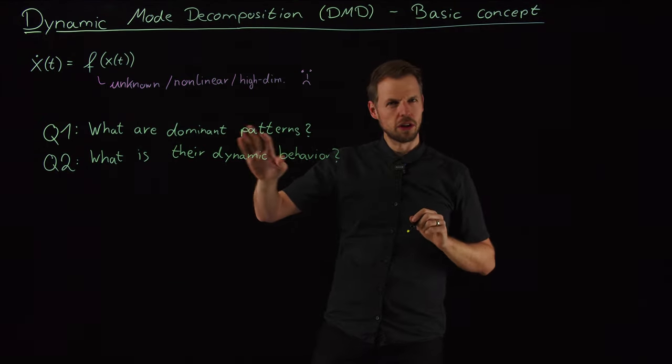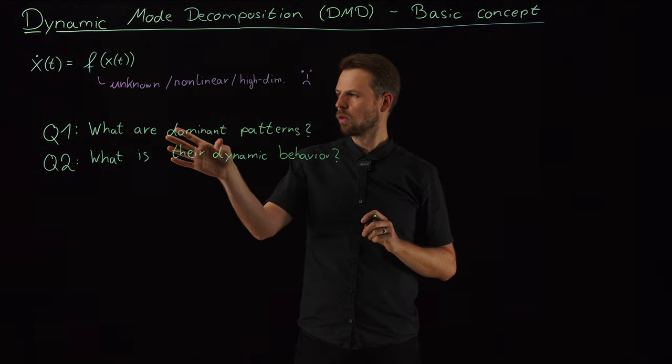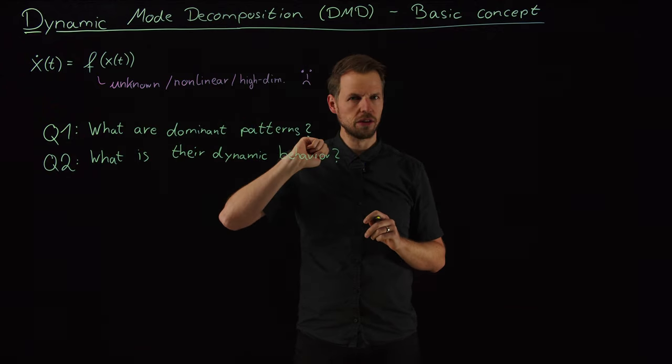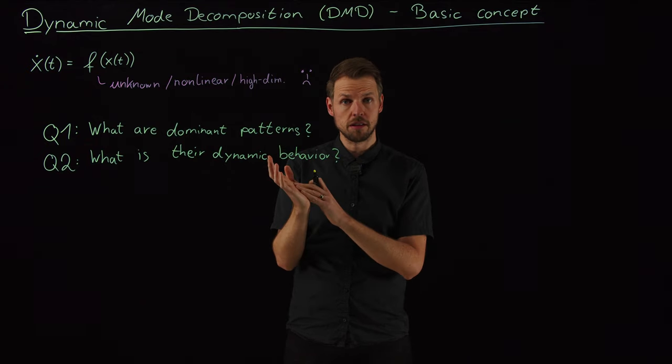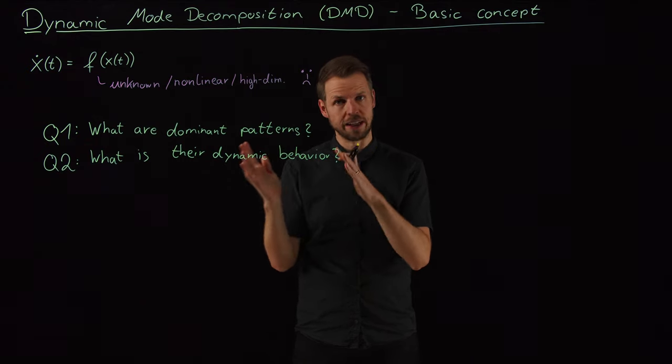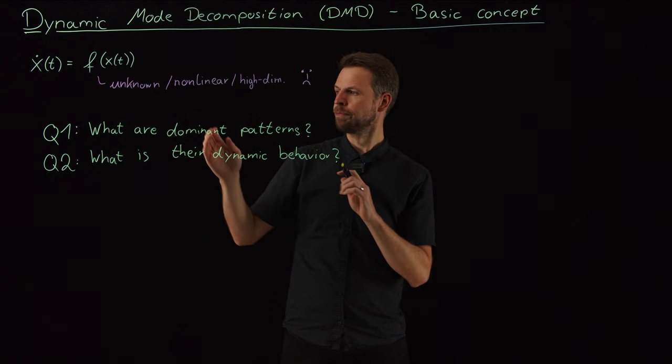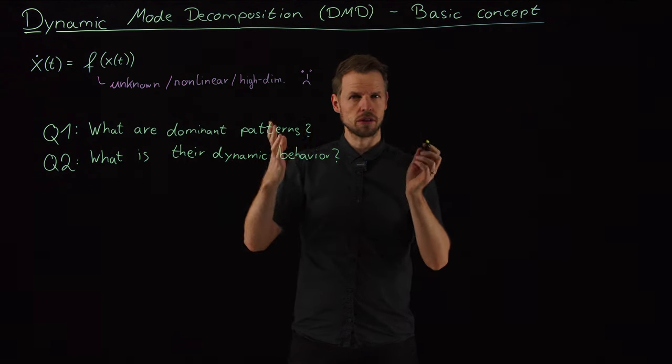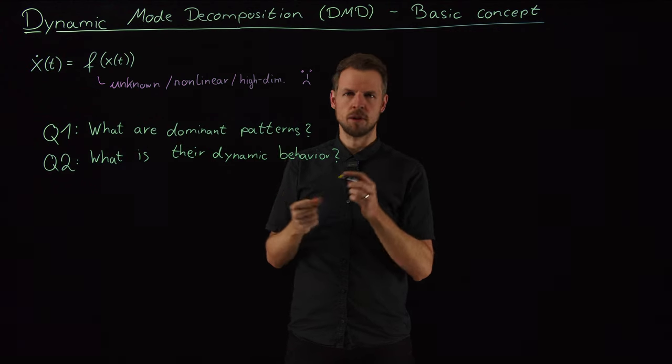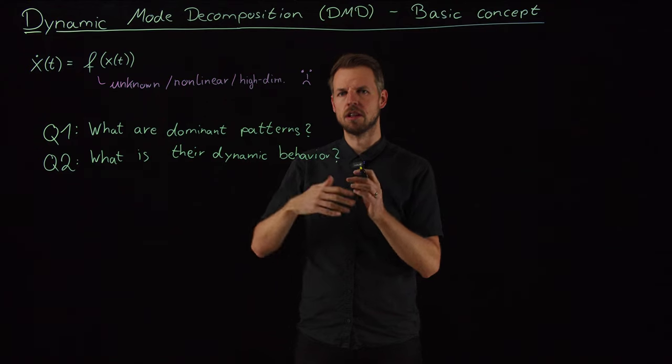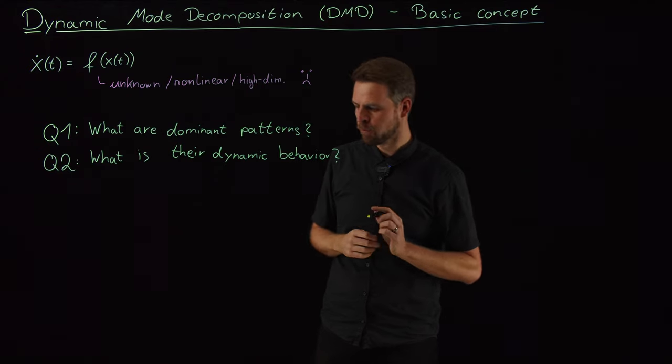If you recall a few videos ago, what we introduced was the singular value decomposition. We said we have data, and we want to find a basis, a low-rank basis, rank r is what we chose, that contains the most dominant patterns, the important features, and covers from a statistical perspective the largest part of the variance.